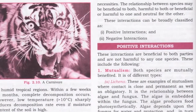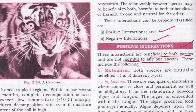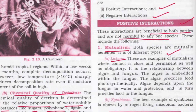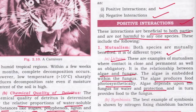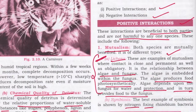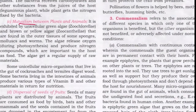No organism can survive independently without the support of other living beings. Interactions are classified as positive and negative. Positive interactions benefit both parties and are not harmful to any species. Mutualism — both species get benefited. For example, in lichens, algae are embedded within fungus; the algae produce food photosynthetically and depend on the fungus for water and protection, in turn providing food to the fungus. Symbiosis — the best example is nitrogen-fixing Rhizobium bacteria. There is also mutualism between plants and animals in dispersal of seeds and fruits and removal of parasites.